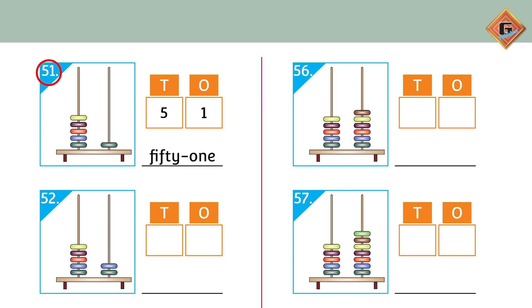Look at page 14, the first picture is of an abacus. There are two rods. The first rod represents the ones and the second rod is tens. On the ones rod there is one bead, and on the tens rod there are five beads.